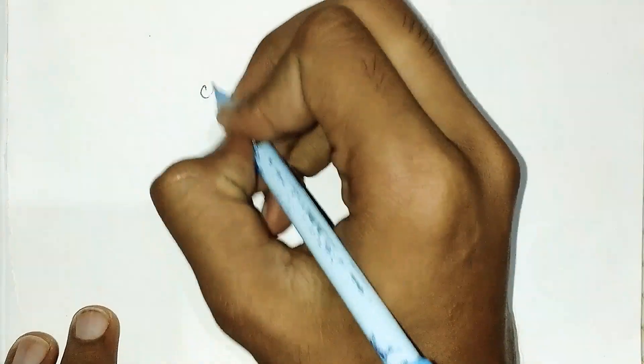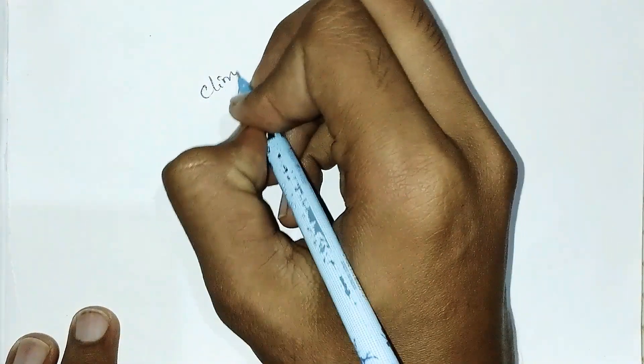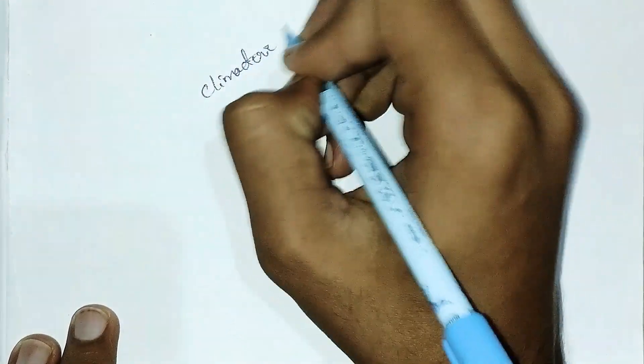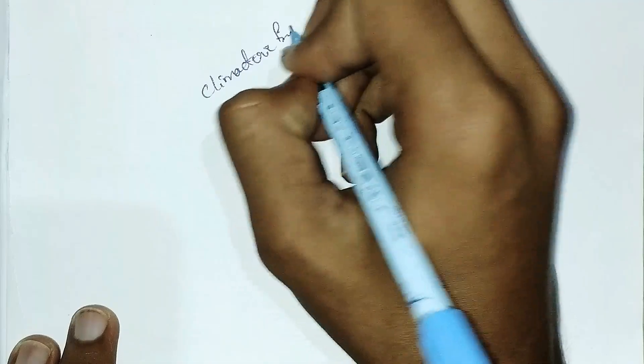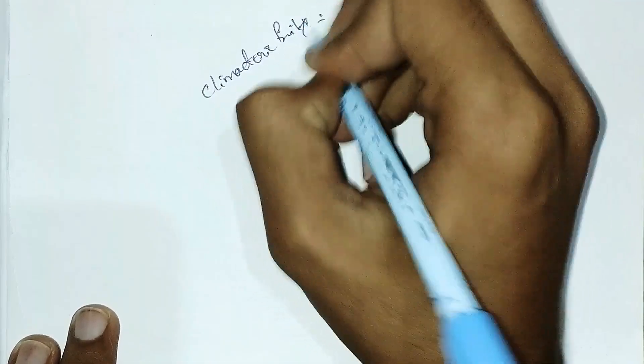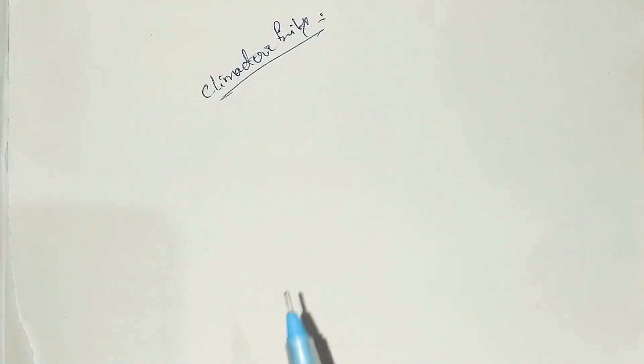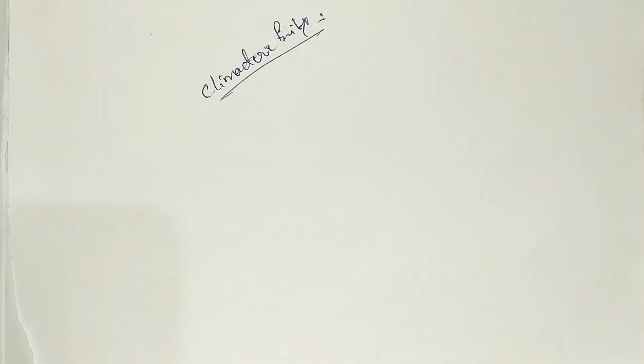First of all, climacteric fruits. Climacteric fruits means fruits which can ripen after being picked and produce much more ethylene.